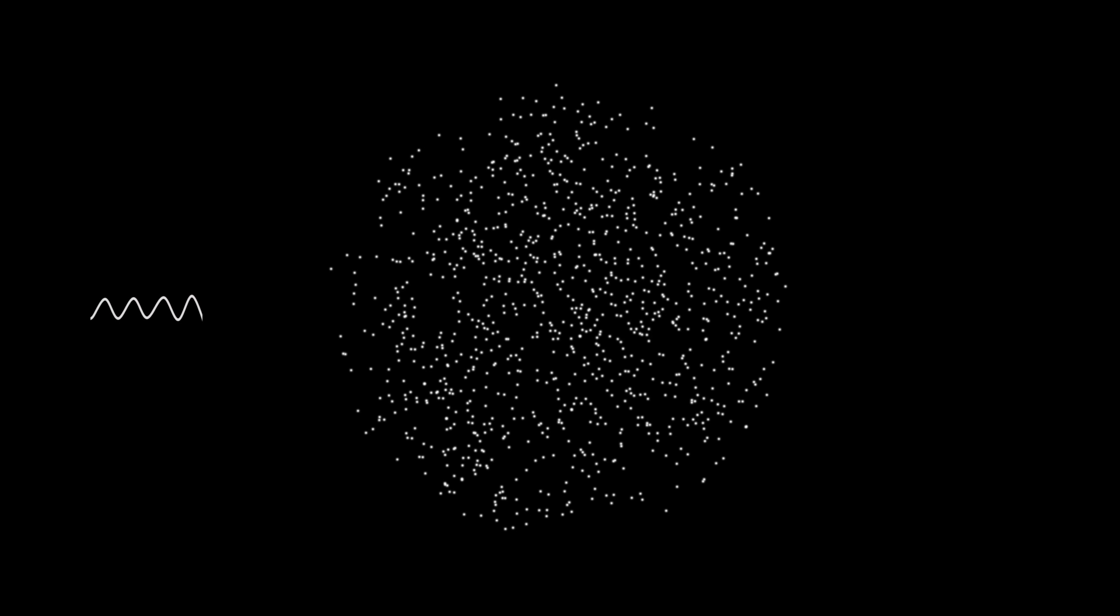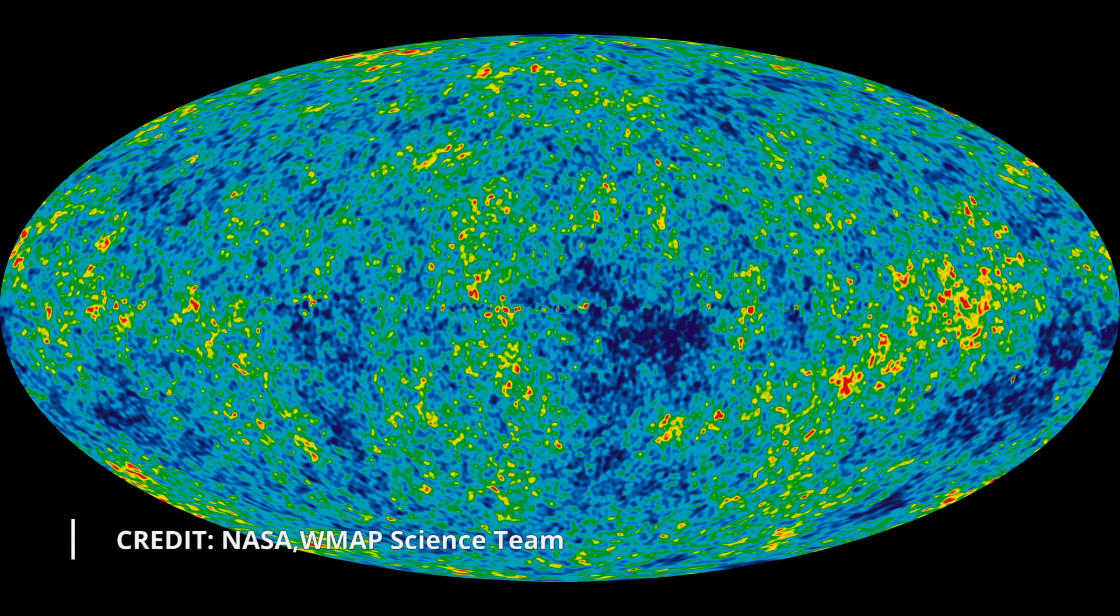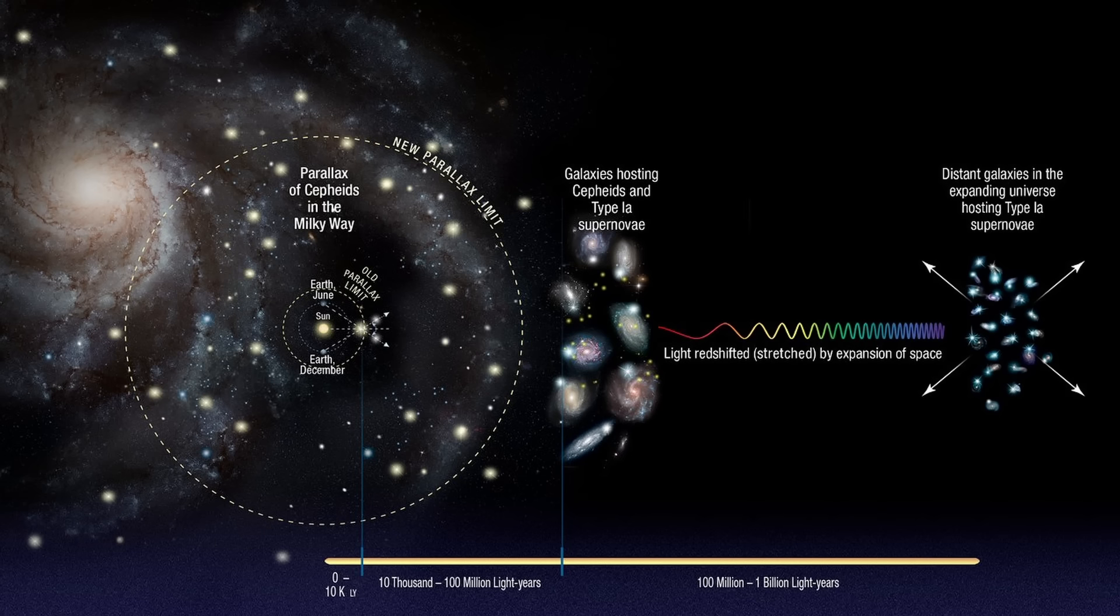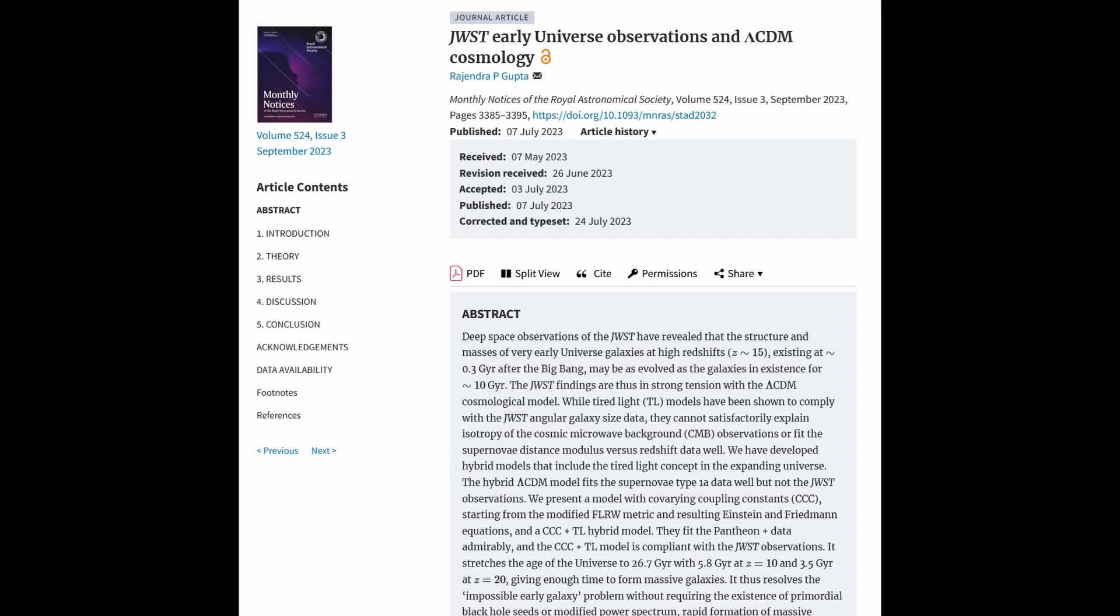Zwicky's Tired Light model posits that photons lose energy through interactions with matter or some other yet to be understood mechanism, resulting in their wavelength stretching out and appearing redshifted. While initially intriguing, this model encountered significant challenges. It struggled to account for key astronomical observations, such as the cosmic microwave background radiation, and faced scrutiny from more comprehensive studies of redshift and light behaviour over cosmological distances. Consequently, the Tired Light model failed to gain widespread acceptance in modern cosmology.